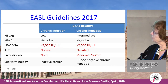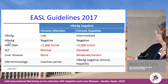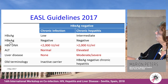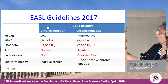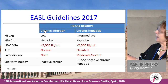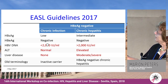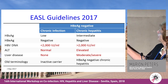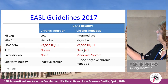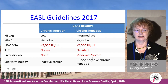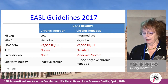In E antigen-negative disease, surface antigen is positive in both chronic infection and chronic hepatitis, and E antigen is negative in both. The distinction lies in HBV DNA, ALT, and liver disease. In chronic infection — the old inactive state — you have low DNA, normal ALT, and no liver disease. In chronic hepatitis, you have elevated ALT and moderate or severe disease.